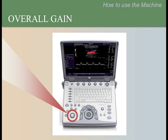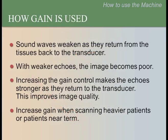The first control is the overall gain. It is the large round control on the lower left corner of the machine. The location of the gain and other knobs often varies between ultrasound machines, so please locate the gain button on your machine. As sound waves travel deeper in the body, the returning echoes weaken. Because fewer echoes return, the quality of the image decreases. The gain control increases the echoes that return to the transducer, making structures in the image clearer and easier to see.